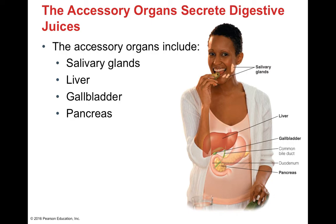The accessory organs include the salivary glands, liver, pancreas, and gallbladder — all responsible for creating and secreting digestive juices. The salivary glands secrete saliva with amylase and lipase. The liver creates bile, which gets stored and concentrated in the gallbladder until the small intestines signals that food has entered, at which point bile is released. The pancreas secretes pancreatic enzymes and bicarbonate ions.